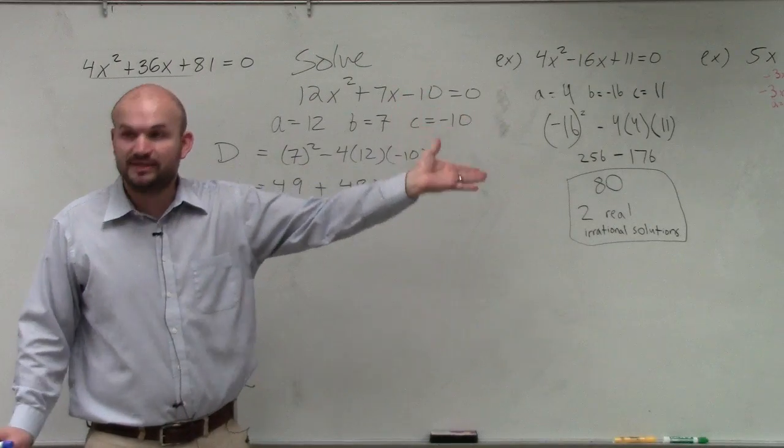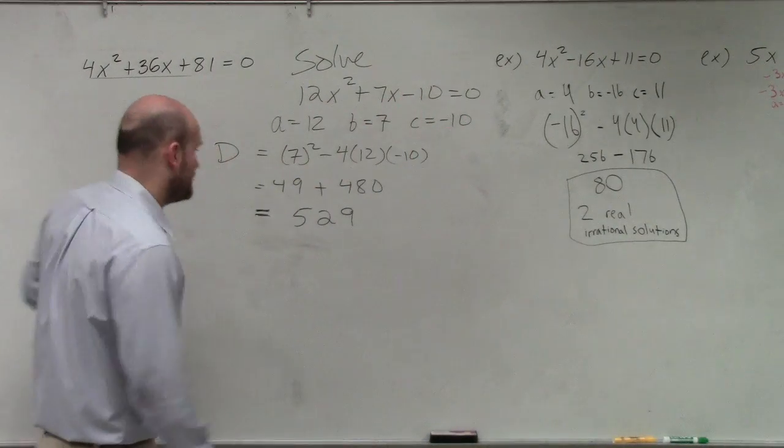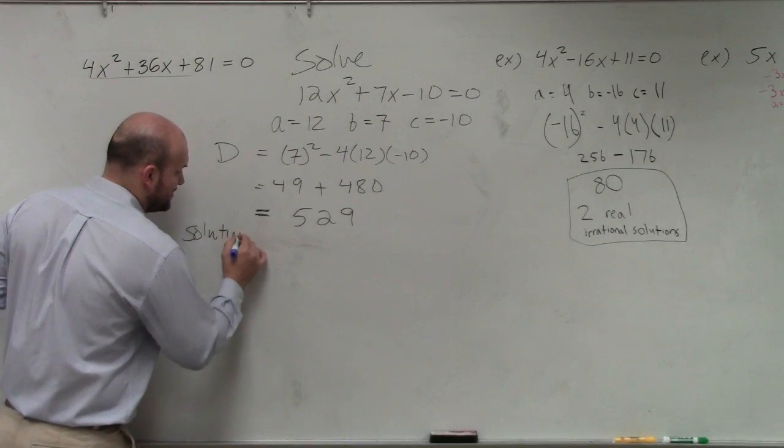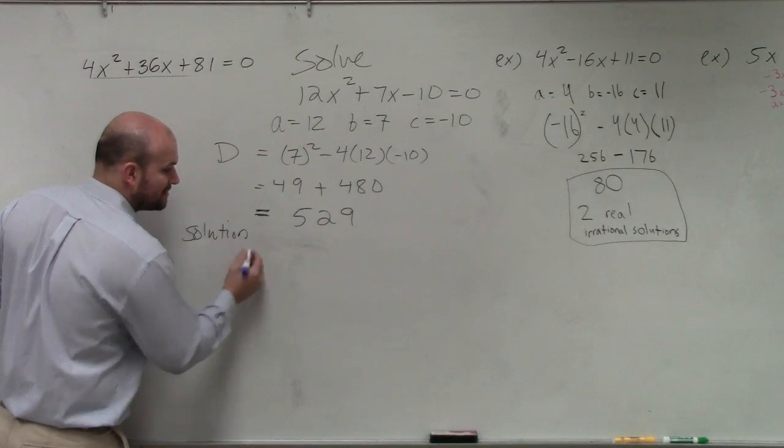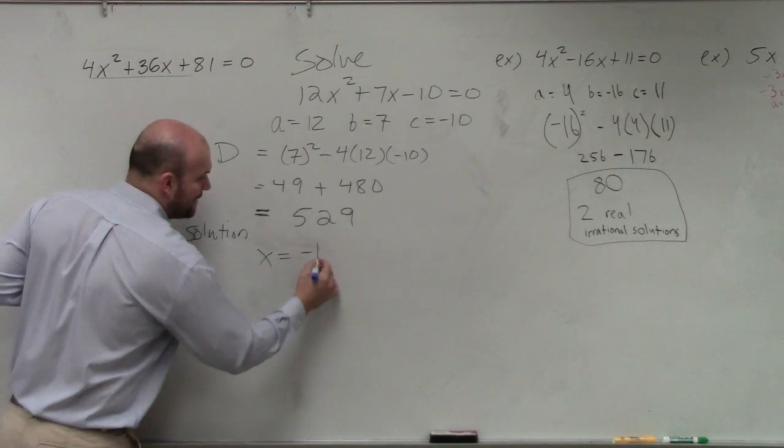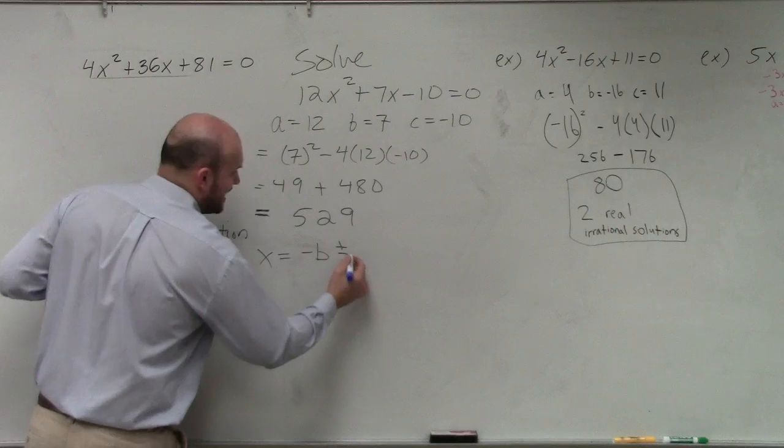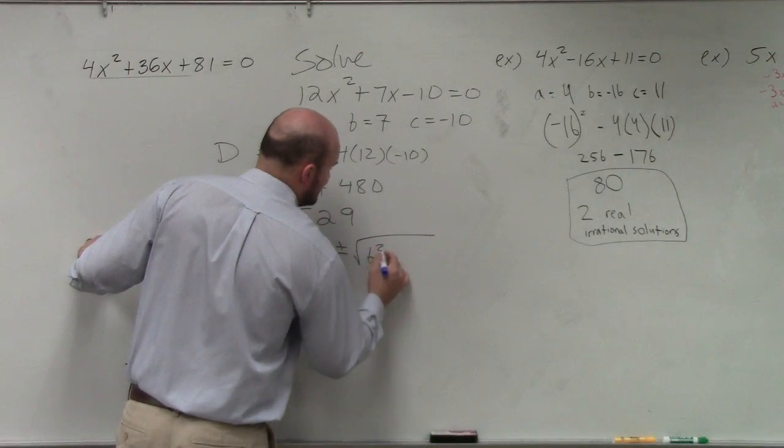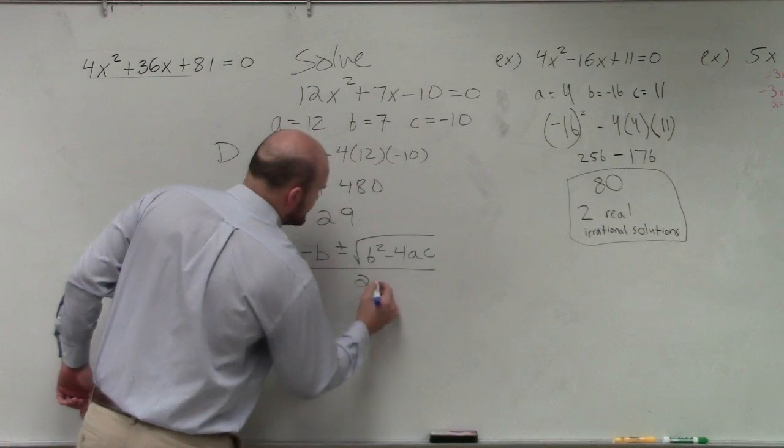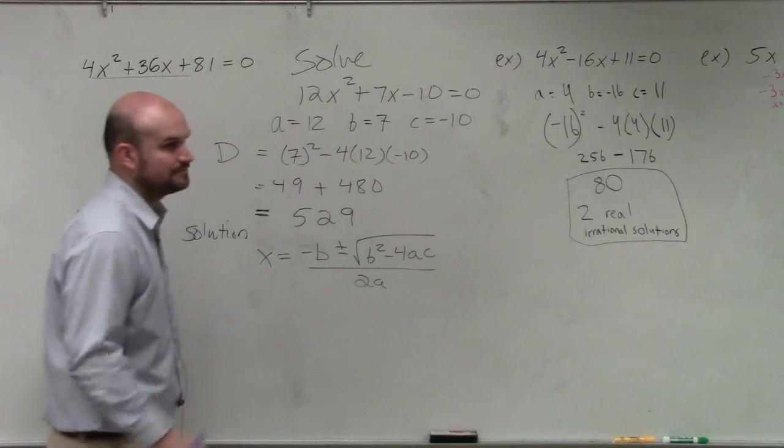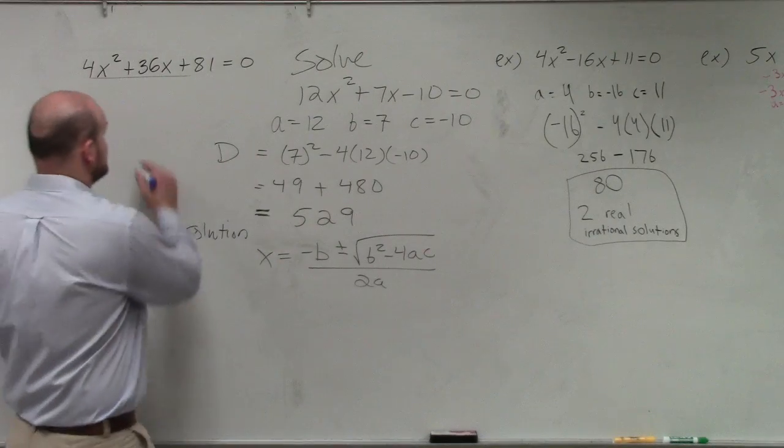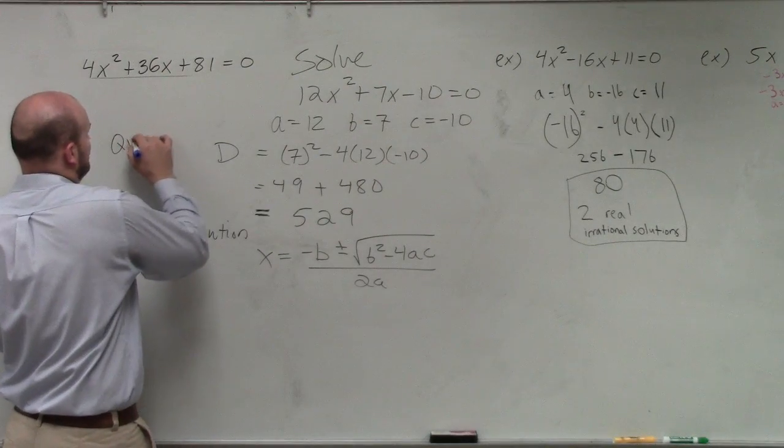So the other thing we can do is the quadratic formula. So the quadratic formula, so the solutions, remember the solutions are the x-intercepts. So the solutions are x equals opposite of b plus or minus the square root of b squared minus 4 times a times c all over 2 times a. Right? You're going to want to write this down. This is the quadratic formula, which I didn't finish up.